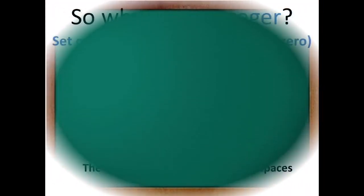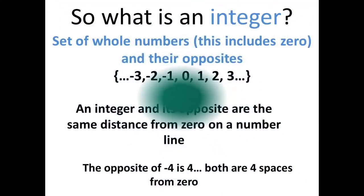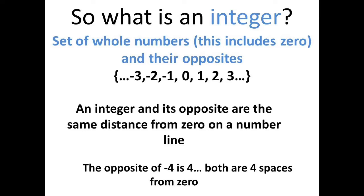Students, what is an integer? It is a set of whole numbers which include 0 and their opposites. For example: minus 3, minus 2, minus 1, 0, 1, 2, 3, and so on.